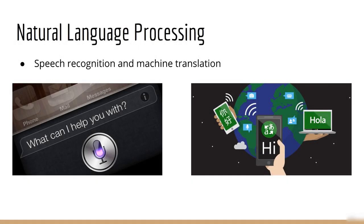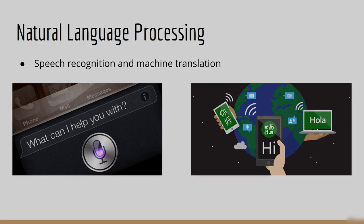Deep learning powers state-of-the-art natural language processing applications, such as speech recognition and machine translation. So whenever you talk to your phone and it figures out that you want to order a pizza or set an alarm for 6 a.m., that's speech recognition using deep learning in action. Neural machine translation has significantly enhanced the capabilities of language translation in recent years. With students in 200 countries around the world, I've made use of this great technology more than once.